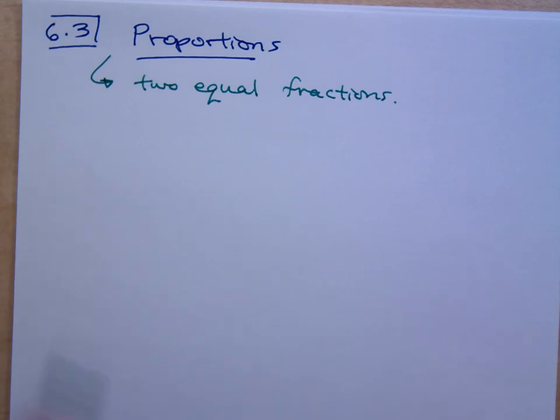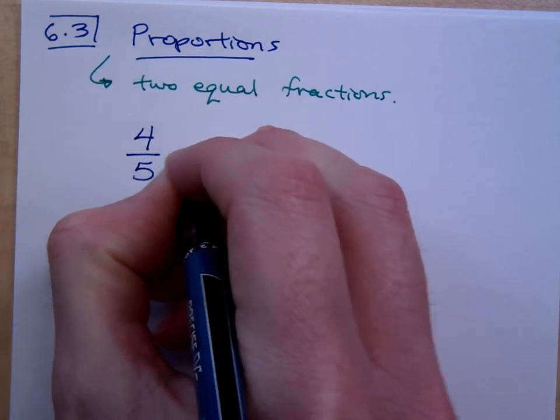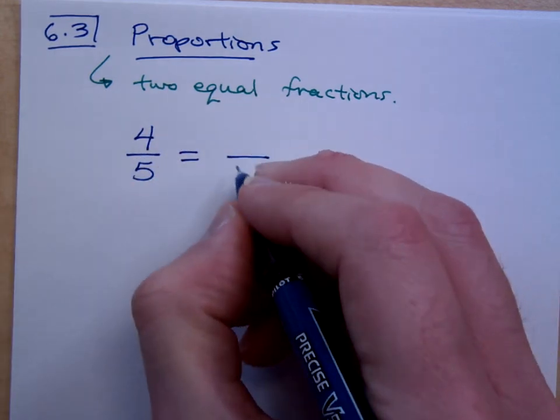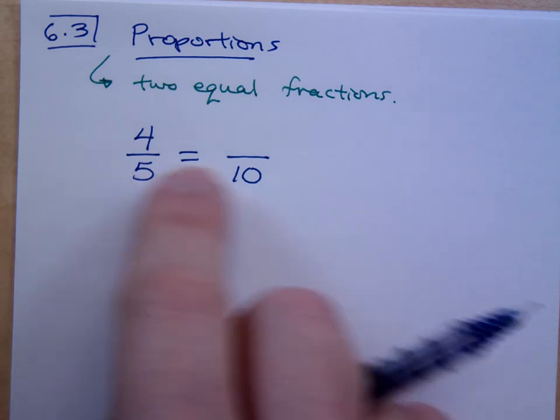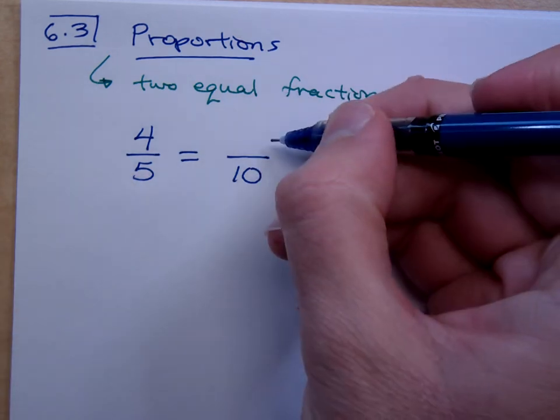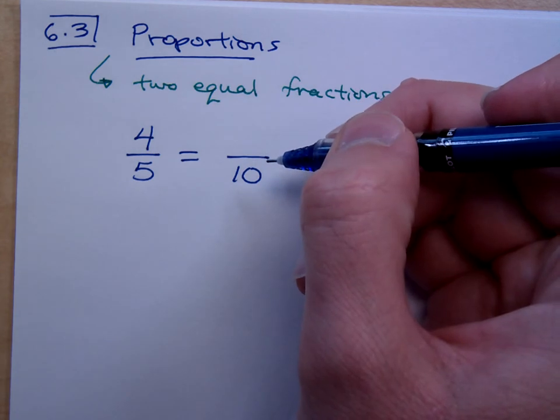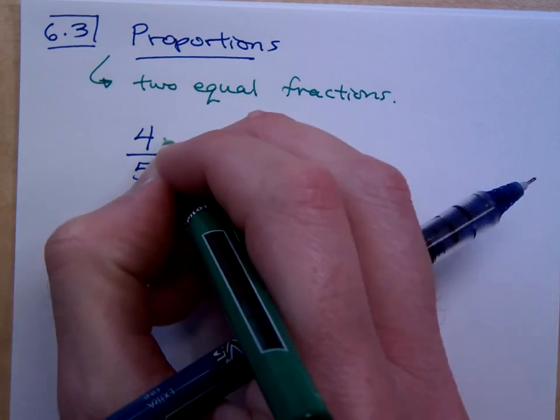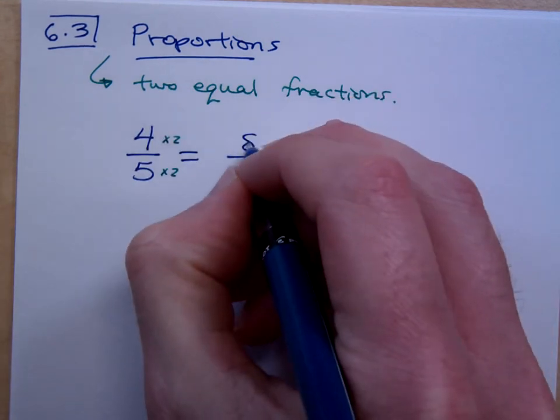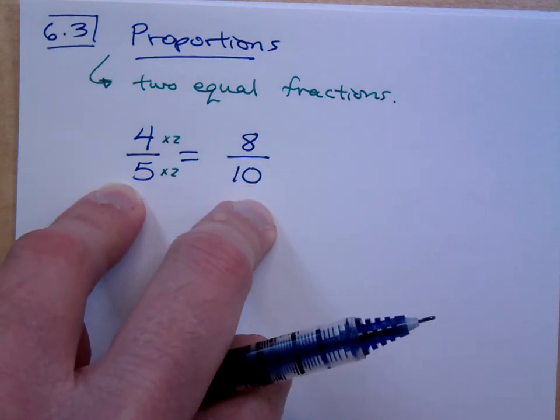Now, we've seen this before. If I have 4 fifths, and I wanted you to make this into an equivalent expression, something over 10, could you do that? How could you make sure these two fractions were equal? What would this guy have to be? How did you get 8, Lisa? Right, this guy was 5 times 2 is 10. If I multiply that times 2, I would get 8. These guys are equal fractions. They mean the same thing.